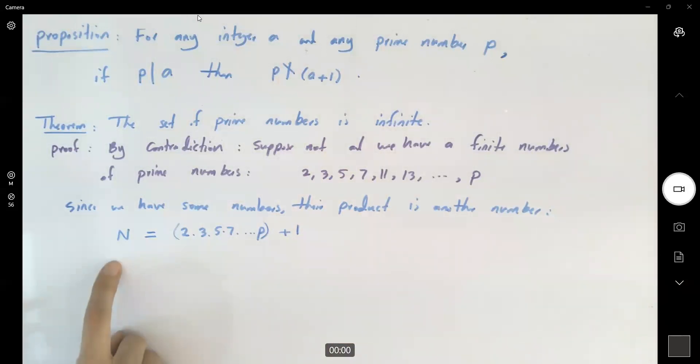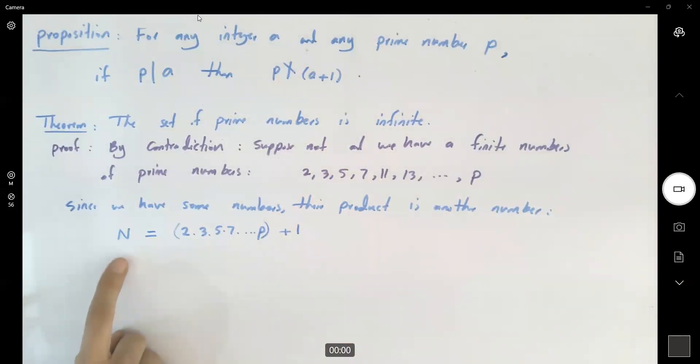So obviously n is larger than 1. So n is larger than 1. That was the whole point that we wanted to do.